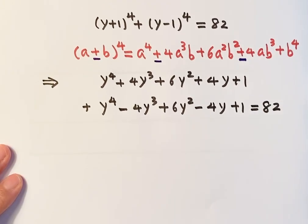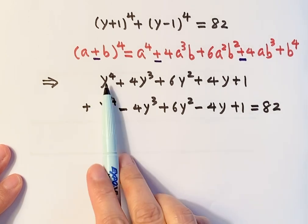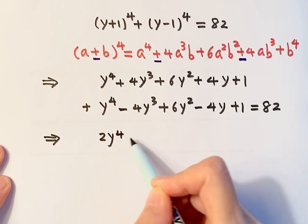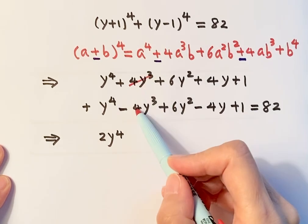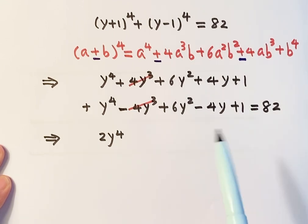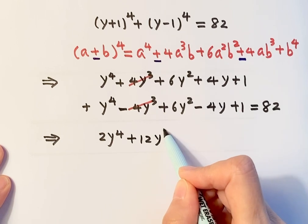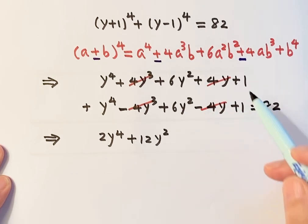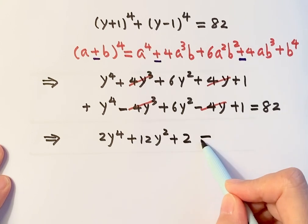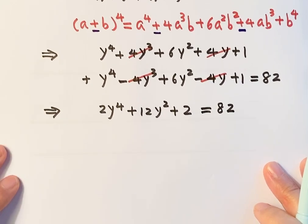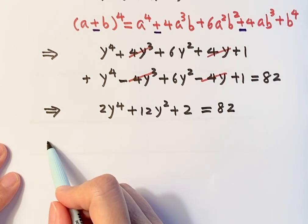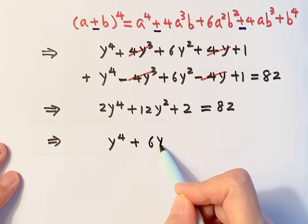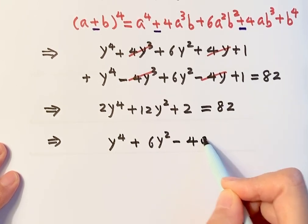Now simplify the left-hand side by adding the two expansions together. The 4y³ terms cancel out (positive and negative), giving 2y⁴. The 6y² terms add to 12y². The 4y terms cancel out. The constants add to 2. So we get 2y⁴ + 12y² + 2 = 82. Since every term is even, divide both sides by 2, giving y⁴ + 6y² + 1 = 41, or y⁴ + 6y² - 40 = 0.